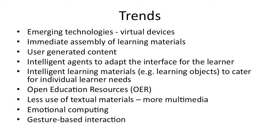We will have user-generated content, where users — the students — will work in groups to generate their own content, and they will give experts and teachers to validate the content. For example, Wikipedia, where students come together and generate and share information. We will also have intelligent agents to adapt the interface to the learner. The system will look at the learner as they complete some mobile learning lessons, detect their learning style, and adapt the interface — giving visual learners a visual interface, and textual learners a textual interface.